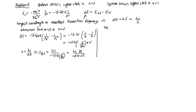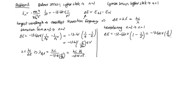For the Lyman series, we transition from n=2 down to n=1. So ΔE = −13.61 eV × (1/1² − 1/2²) = −13.61 × (1 − 1/4) = −13.61 × (3/4) eV. Therefore λ_Lyman_longest = hc / (−13.61 × 3/4) = hc × 4 / (−13.61 × 3).